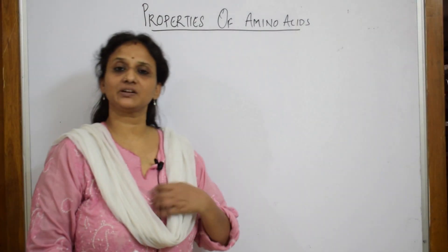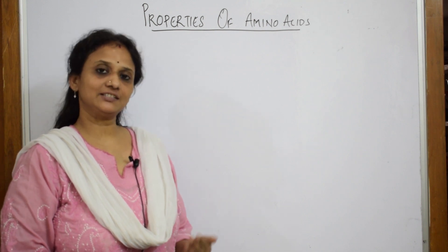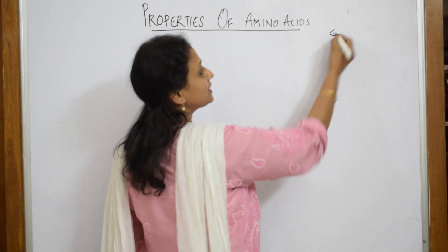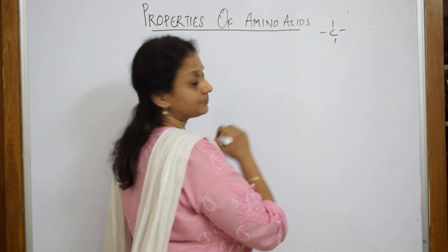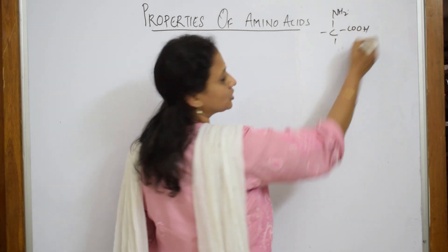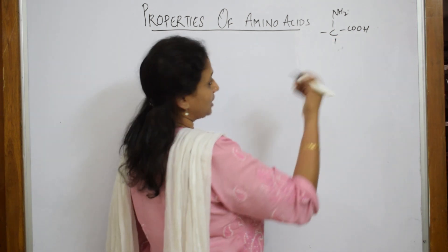So let us learn the properties of amino acids. We have already seen the structure of amino acid. Let's write it once again. Amino acid basically has a carbon with four tetravalency. On one end we have an amino group, one end we have a carboxylic group separated by this carbon, hence called alpha carbon or alpha amino acid.